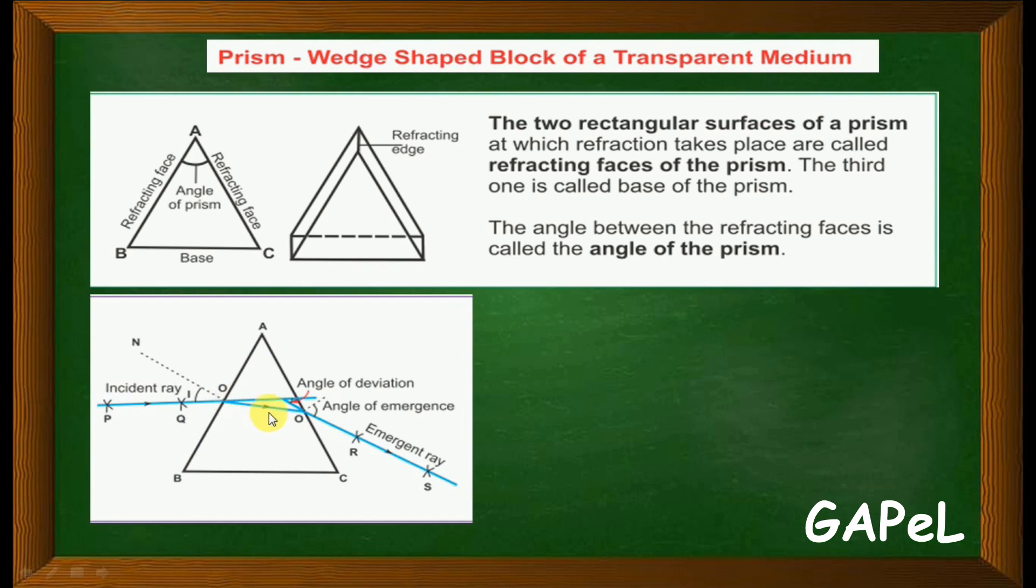This dotted line is the normal to the AC reflecting face. After this point it is going into the rarer medium again, so the light bends. That is the speciality of the prism. The light bends towards the base. And this is your emergent ray.